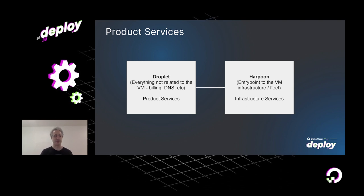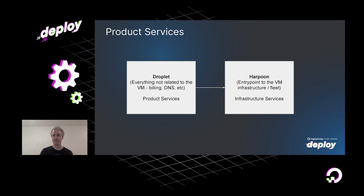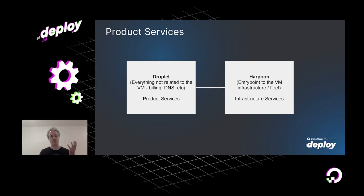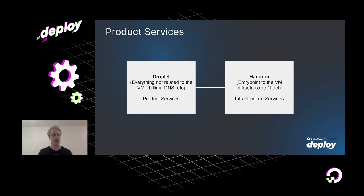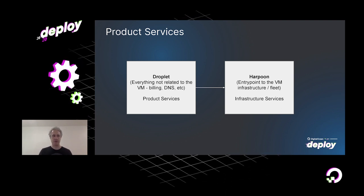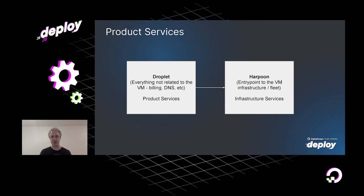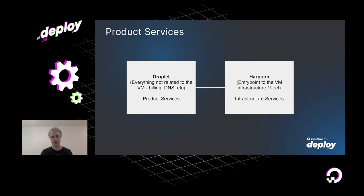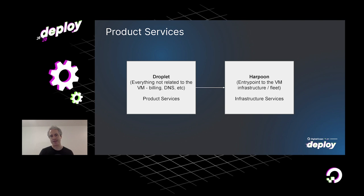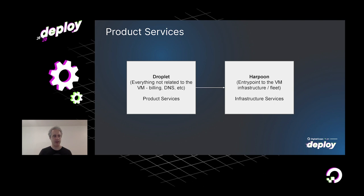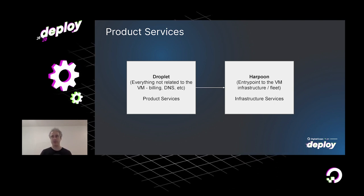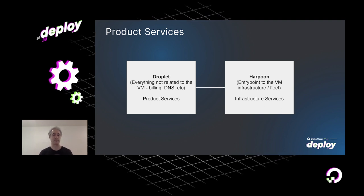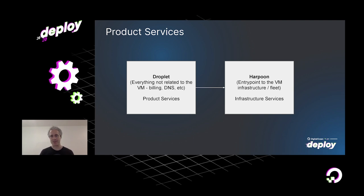The Droplet service also accounts for any in-flight requests. The actual VM itself is a differing infrastructure service because not all VMs on DigitalOcean are necessarily a Droplet — think Kubernetes workers or DBAT instances, for instance. Droplet's first responsibility when it gets this request is validation of sizes. It drops a message on the bus to alert DigitalOcean at large that this create request has been initiated, and then it's handed to a service called Harpoon.